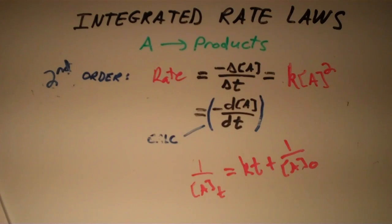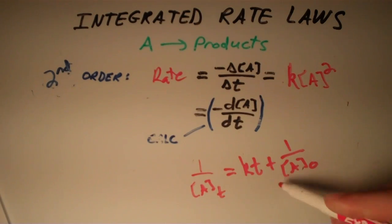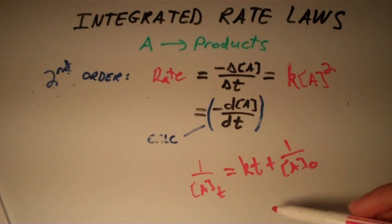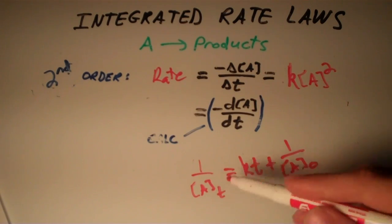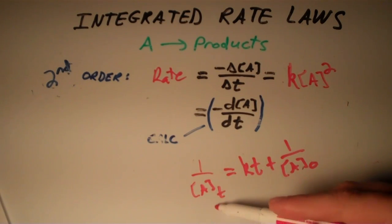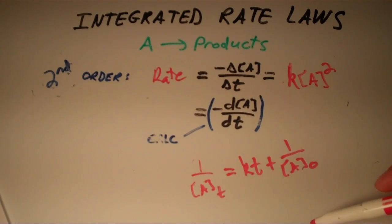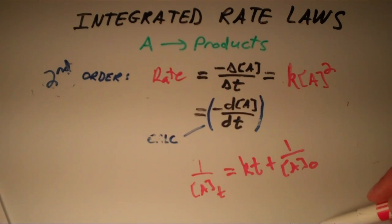Once again, any three of these quantities — the initial concentration, the final concentration, the time interval, or the rate constant — we can solve for whichever one is unknown.